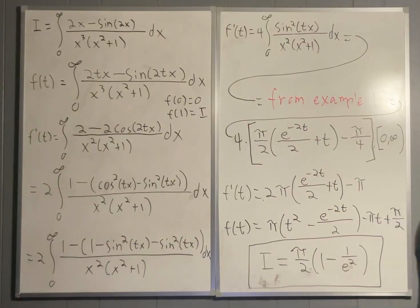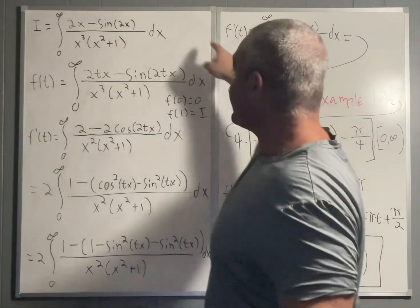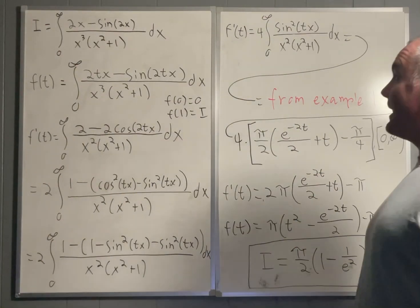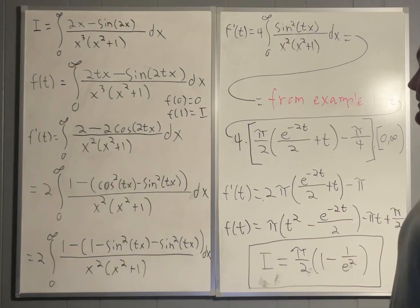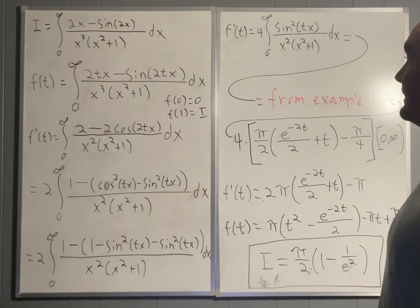Hi everybody, welcome back to another video on Feynman integration. Today we will be evaluating this integral. It's the integral from 0 to infinity of 2x minus sine of 2x all over x cubed times x squared plus 1 dx.